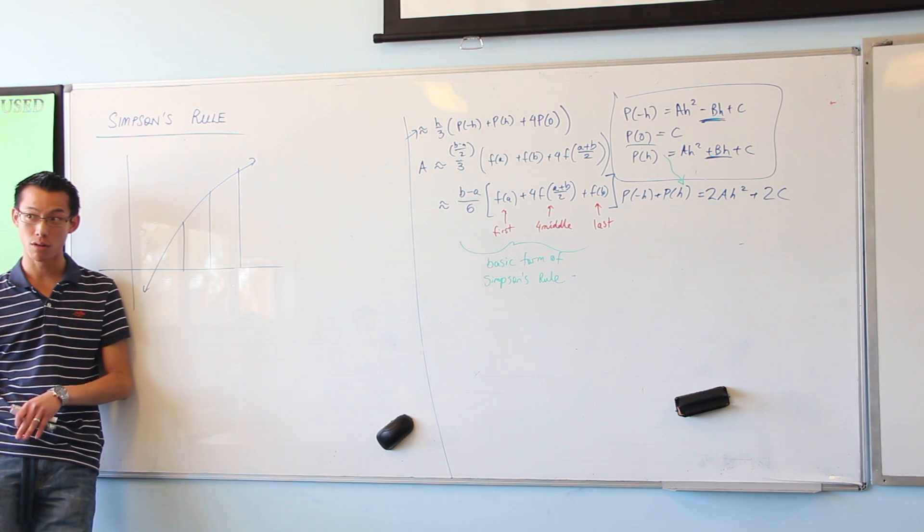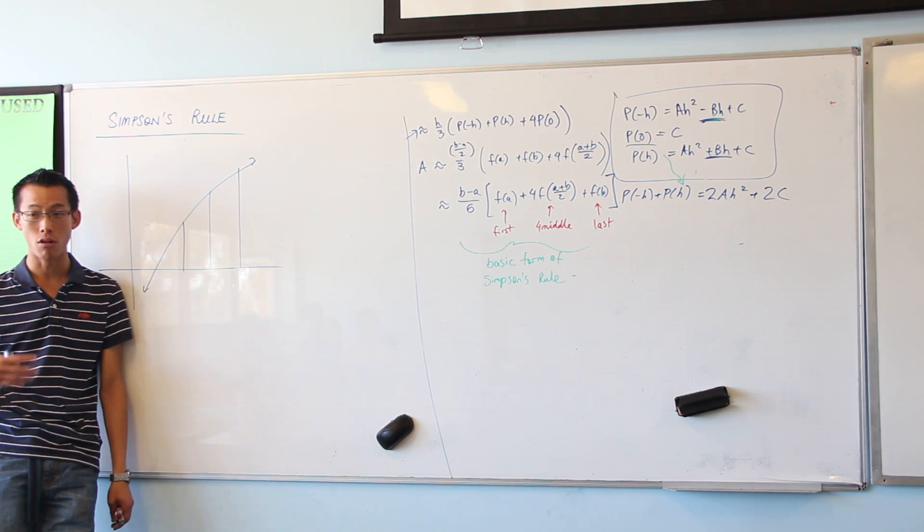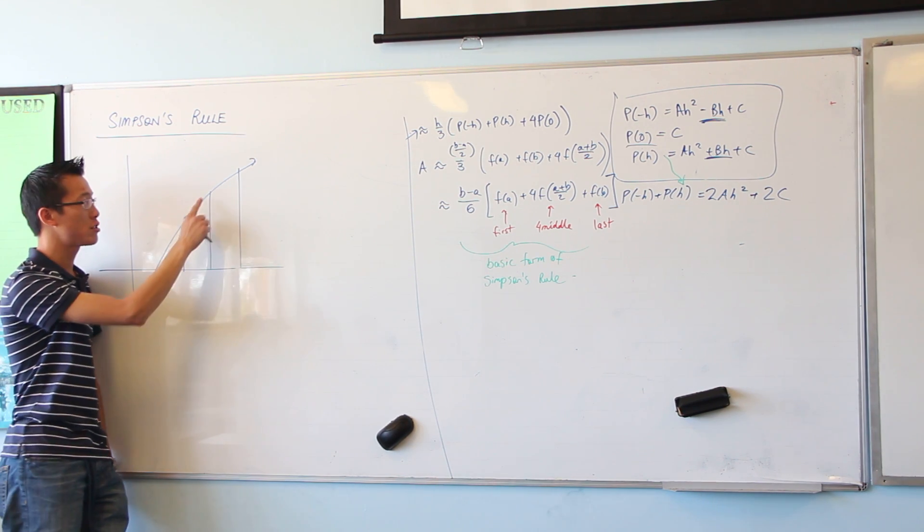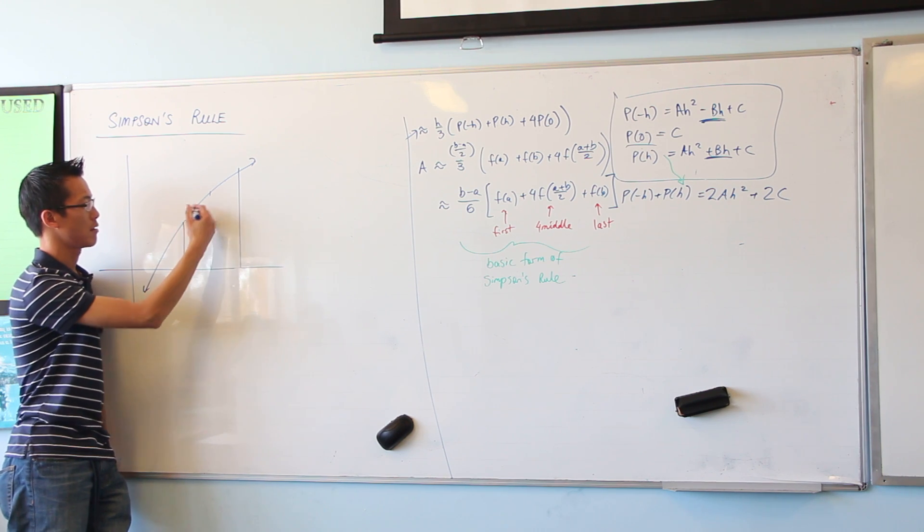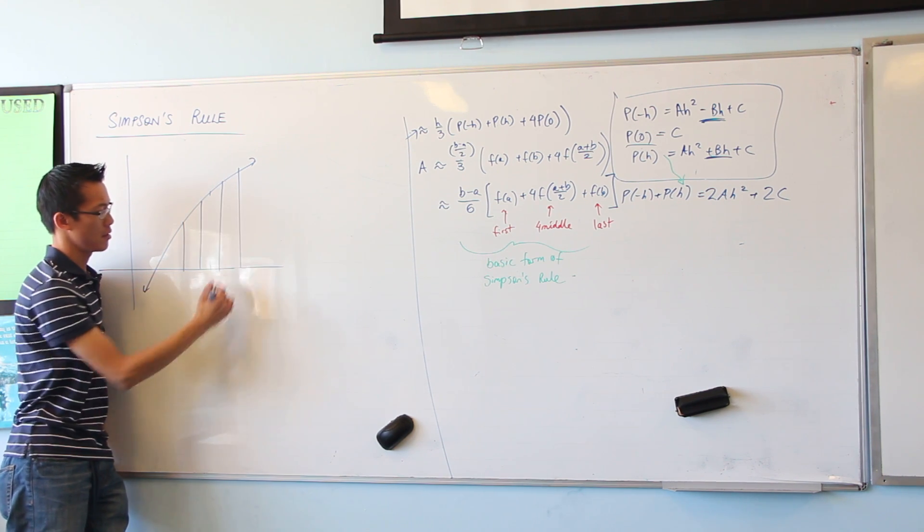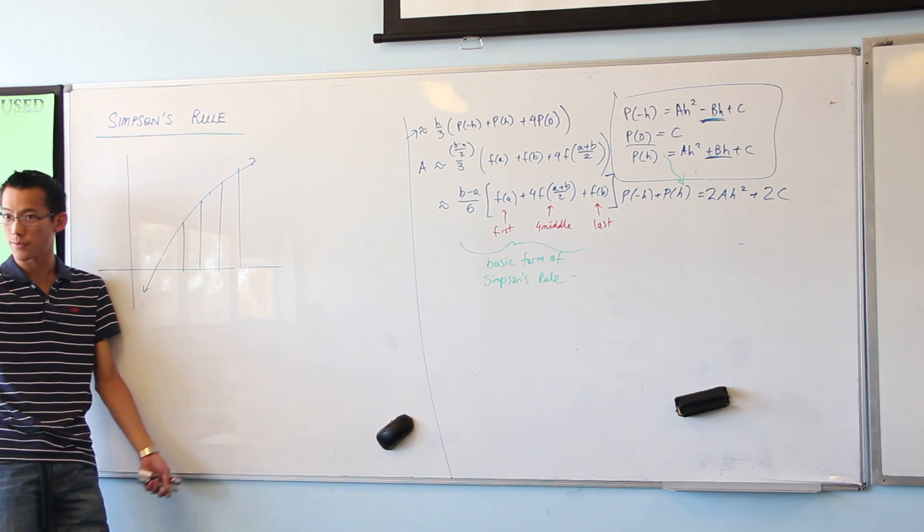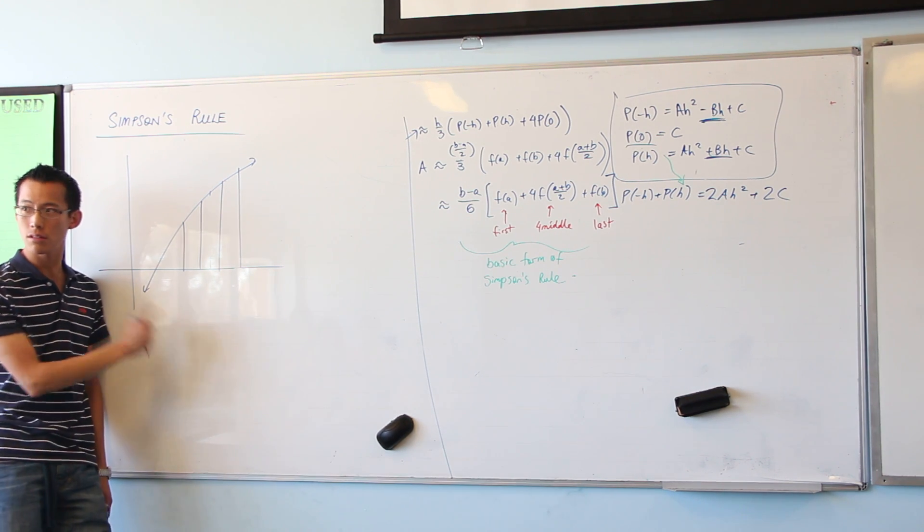Now if I were doing trapezoidal rule, and I wanted to be more detailed, at this stage, I've got two trapezia. So what would you do? The next step would be, we would just have three, right? So I could make three trapezia out of this, and then I'd go evaluate, and it's fine.